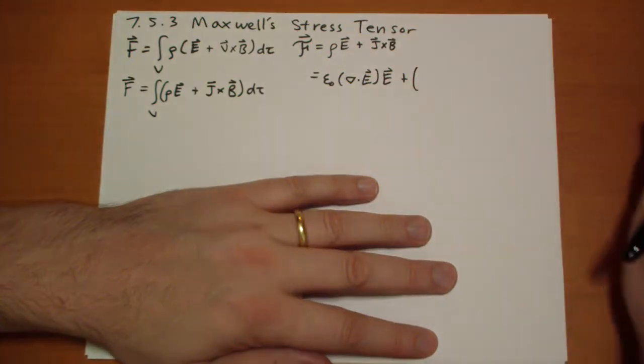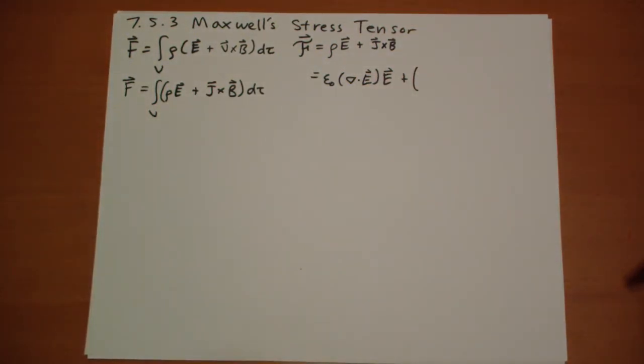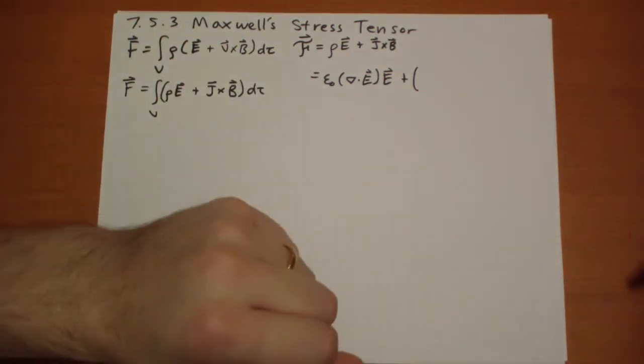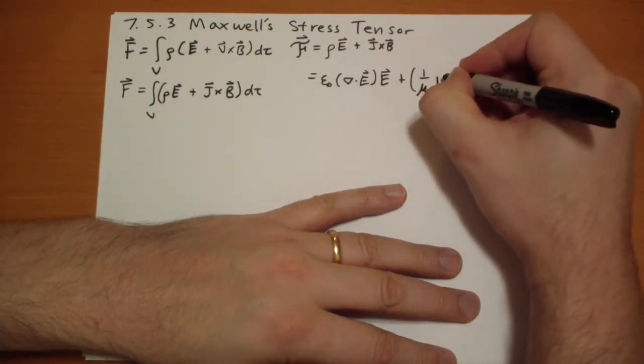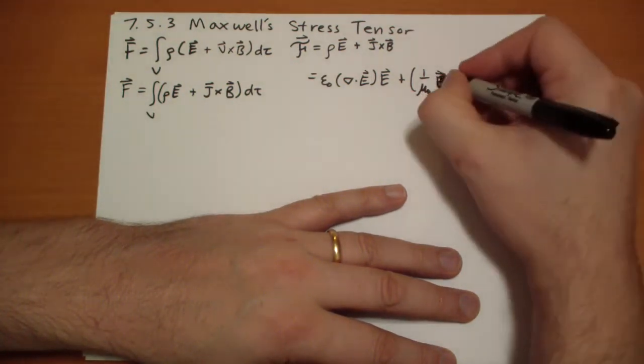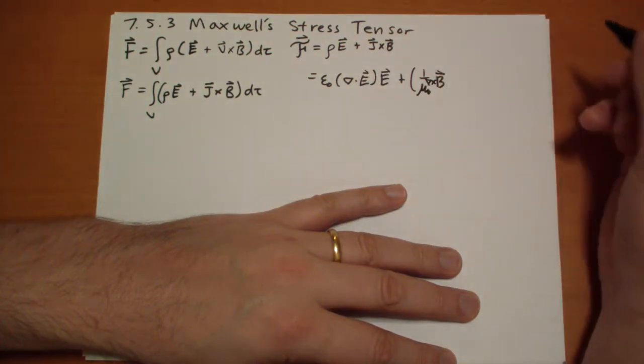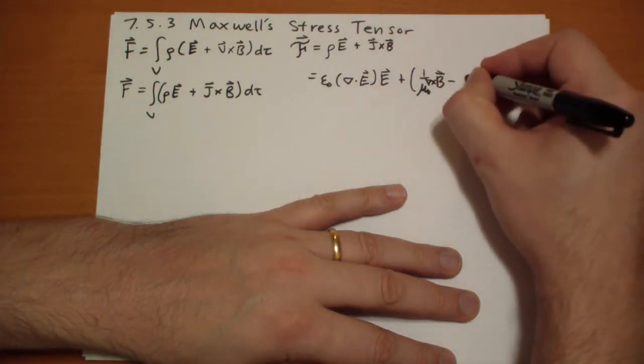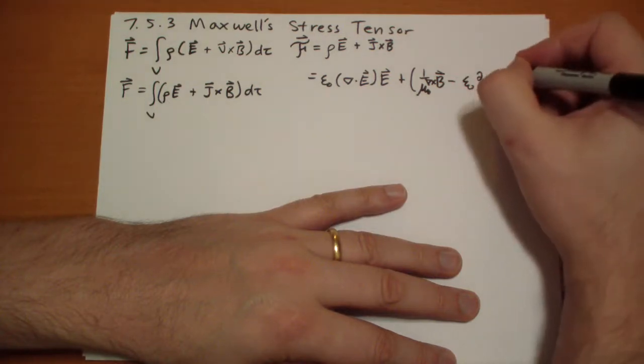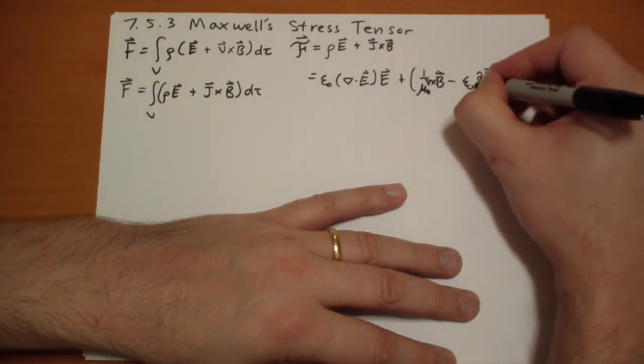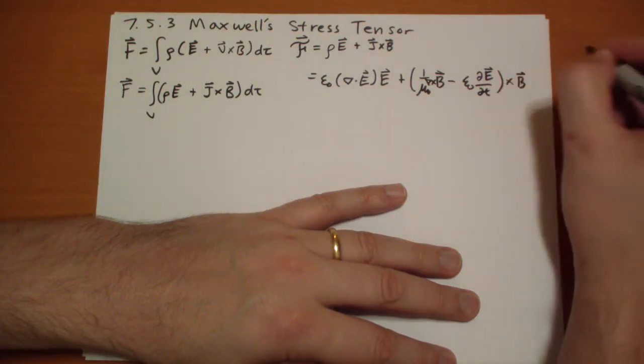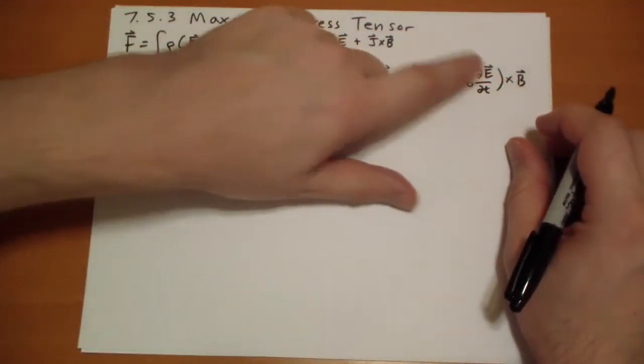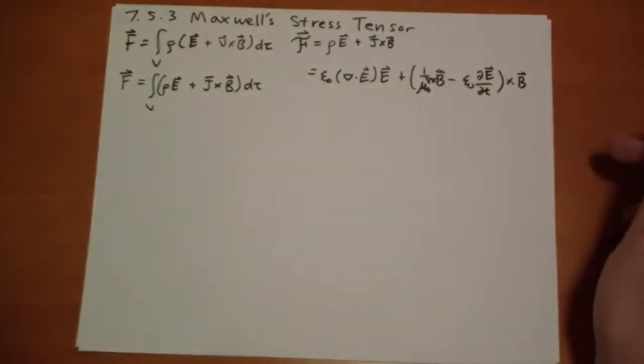And then our J vector, well, we just take Ampere's law with Maxwell's correction and divide everything by mu naught, and we get an equation that solves for J. That leaves us with 1 over mu naught B vector curl of B, holy cow, I already made a mistake. Curl of B minus epsilon naught the time derivative of our friendly E field. And all of that is cross B.